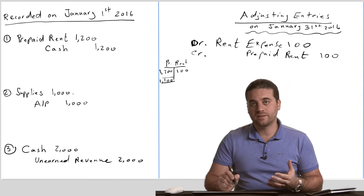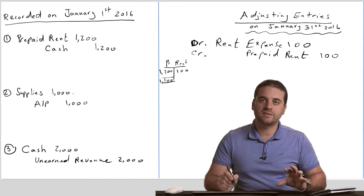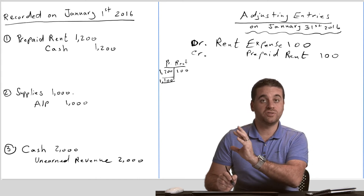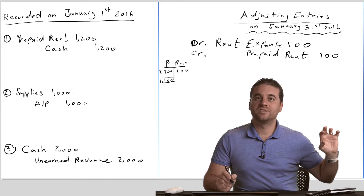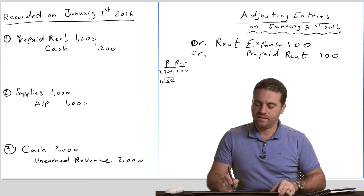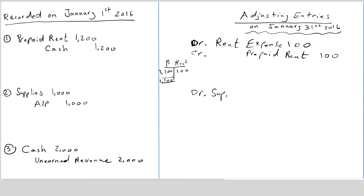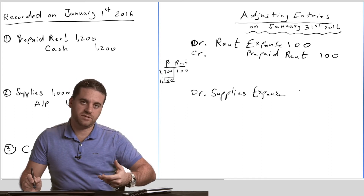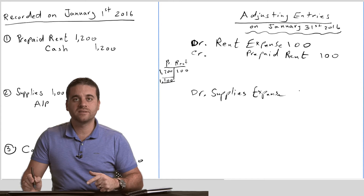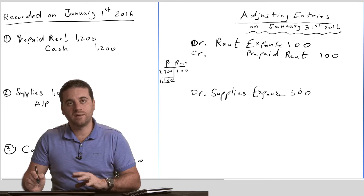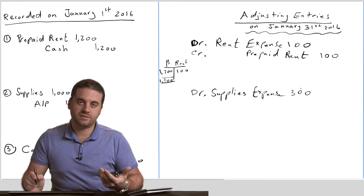There's a huge difference between supplies expense and supplies. Supplies expense is an expense account; supplies is an asset account. Supplies expense shows the amount of supplies consumed; supplies shows the amount still available with value. We debit supplies expense and remember: we record not the leftover but what we consumed. During our entries, we record the changes in the balances. The supplies account changed — it decreased by $300, so we record $300. We do not record the ending balances in journal entries; we record the changes in the balances.